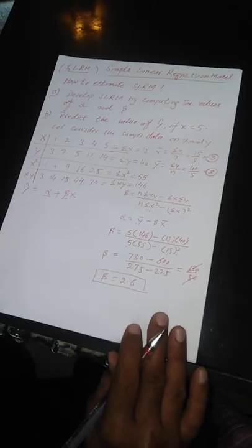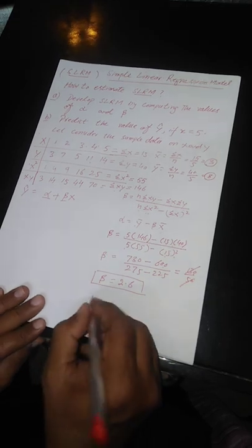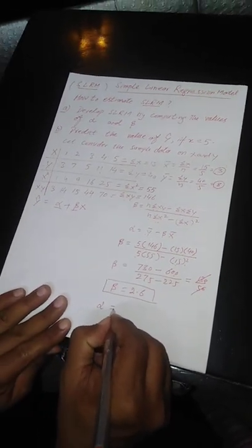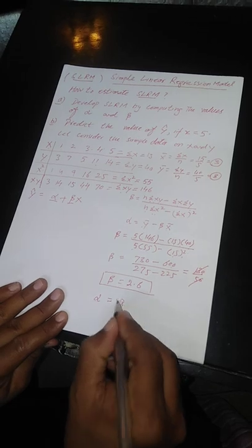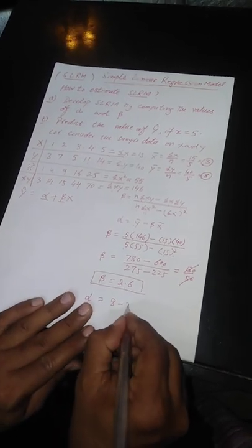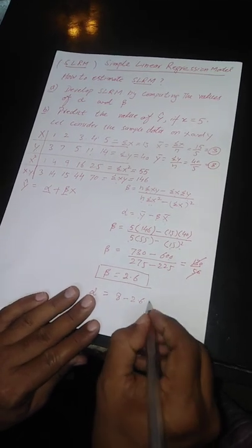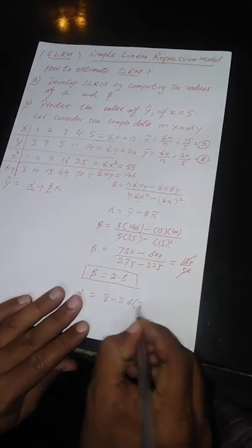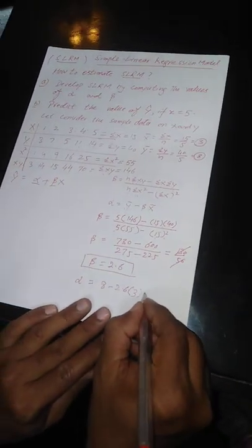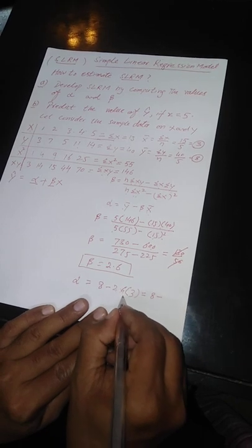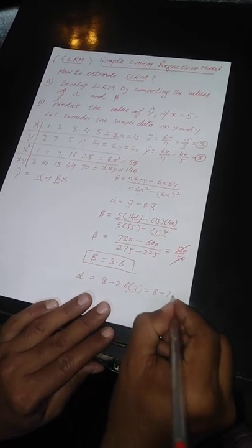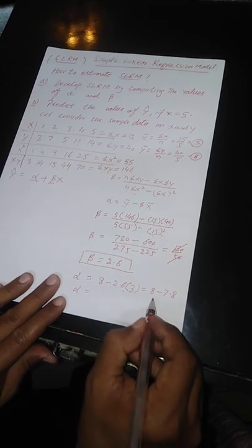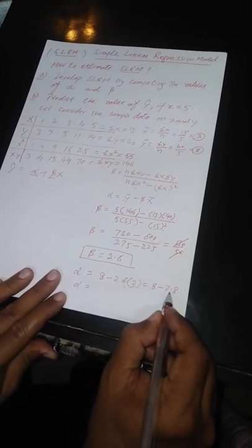Now we find alpha. Alpha is equal to ȳ minus beta times x̄. We already computed ȳ = 8 and x̄ = 3. So alpha = 8 minus 2.6 times 3. First, 2.6 times 3 = 7.8. So alpha = 8 minus 7.8, which gives us 0.2.